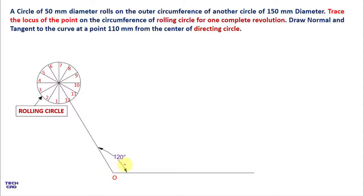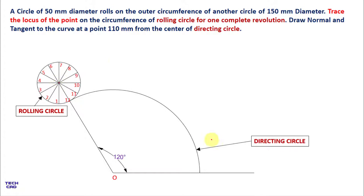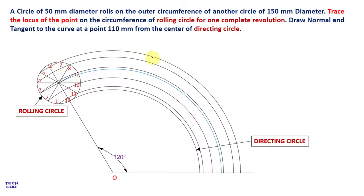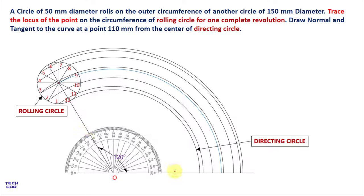To divide the rolling circle into 12 equal parts, make angles of 30 degrees each. Now put your compass at point O, open your compass from O to 12, and mark an arc — this represents the directing circle. The rolling circle will roll along this arc. Take arcs from all 12 equal divisions: from 11, 10, then from the center — the blue line represents the center arc — then from 9, 8, 7, and 6.